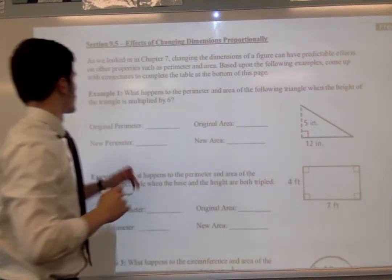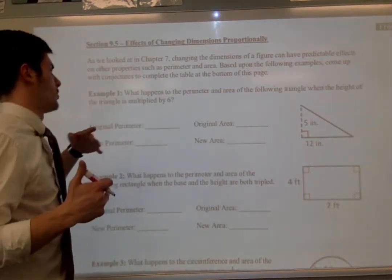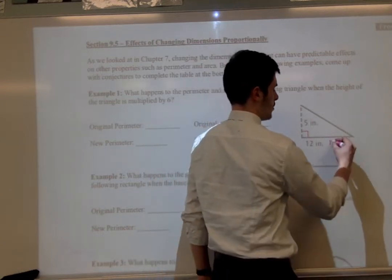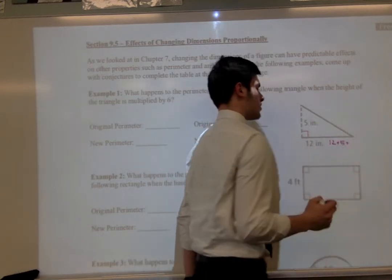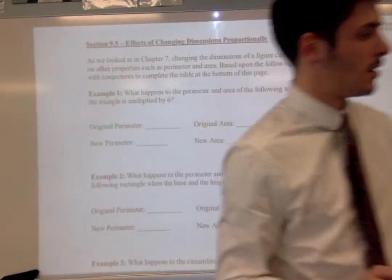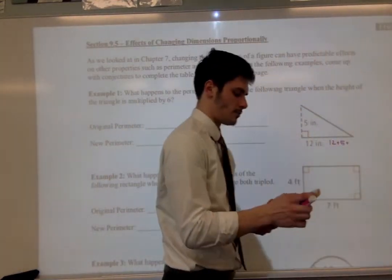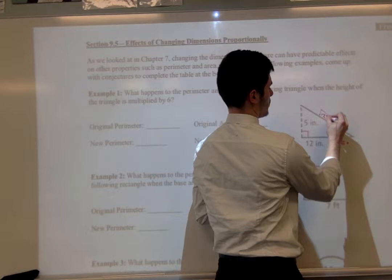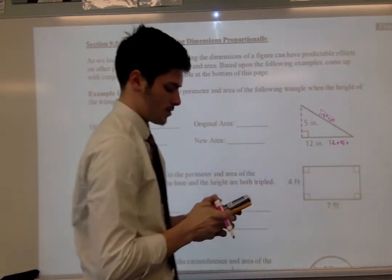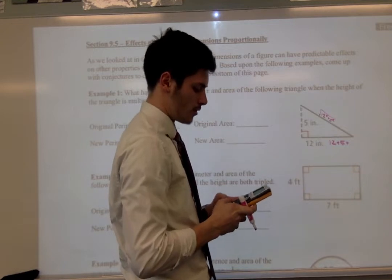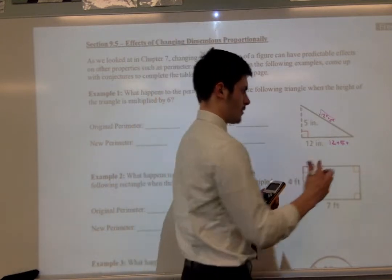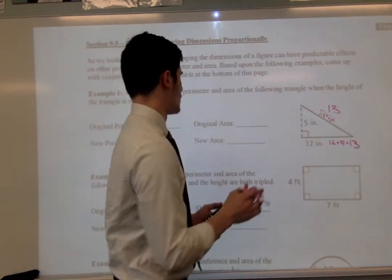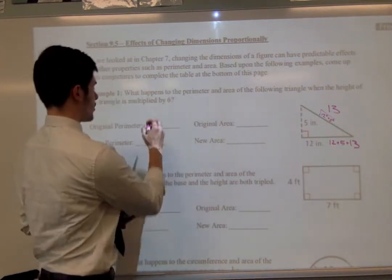So let's look at this first one here. What happens to the perimeter and area of the following triangle when the height of the triangle is multiplied by 6? So the original perimeter is going to be 12 plus 5 plus Pythagorean theorem real quick. We know this side is going to be equal to the square root of 12 squared plus 5 squared. So the square root of 169 is 13. So 12 plus 5 plus 13. The original perimeter is 30 inches.